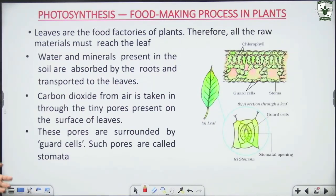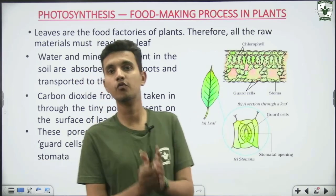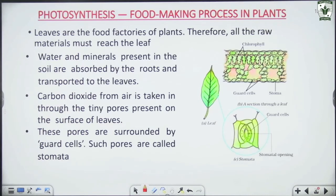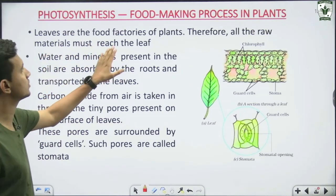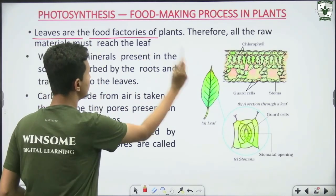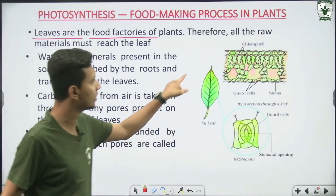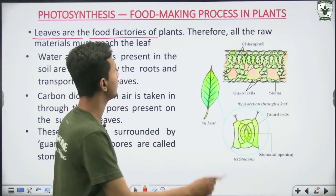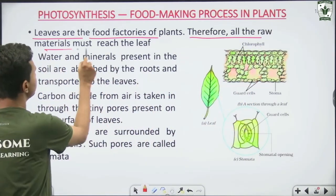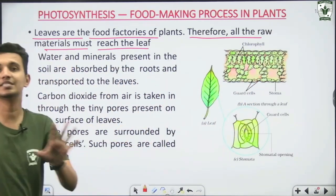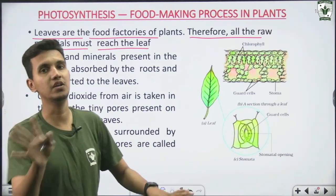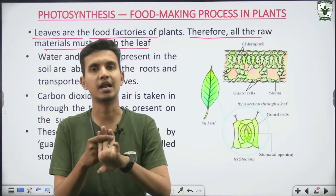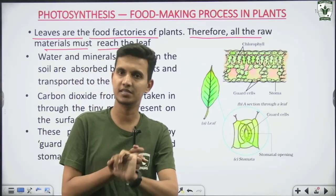Photosynthesis is the food-making process in plants. Leaves are the food factories of plants because leaves are the site where food is synthesized. Chlorophyll, the green-color pigment, is present in leaves. Therefore all raw materials must reach the leaves: number one, carbon dioxide; number two, water; number three, sunlight; and number four, the chlorophyll substance.